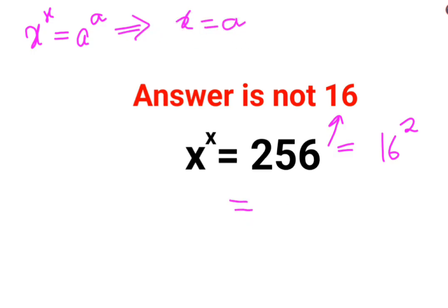So here, yes, this is correct. The first step is absolutely fine. But at this point, you cannot deduce that x value is 16 or 2.